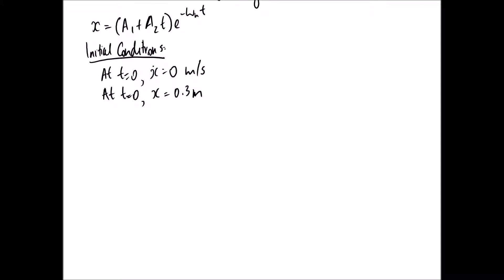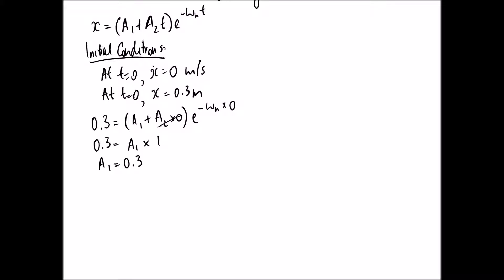The easiest condition to use first is the position one, since our equation is already in terms of x. Substituting x = 0.3 and t = 0, the exponential becomes e to the power of zero, which is one, and the A2·t term vanishes. So we get 0.3 = A1 times one, meaning A1 equals 0.3.